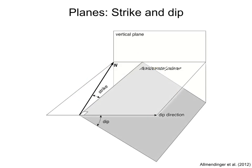Let's start with the orientation of planes. The orientation of a plane — for example, the gray plane in this figure — is described by two measurements: strike and dip. Strike is the angle that the horizontal line on the plane, the blue line in the figure, makes with the geographic north.